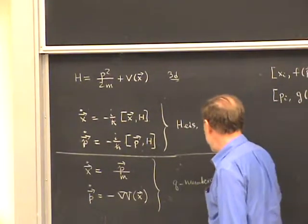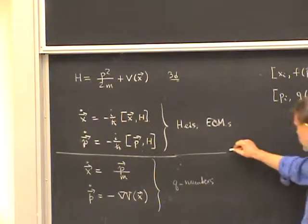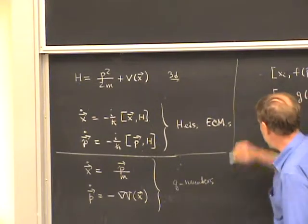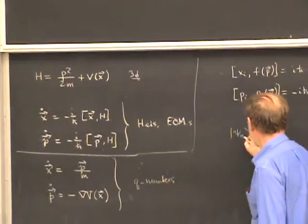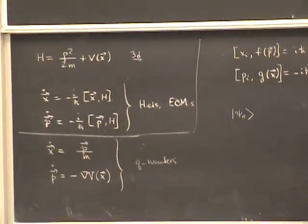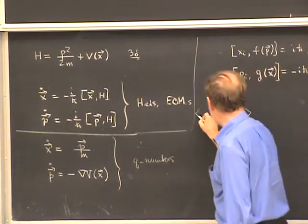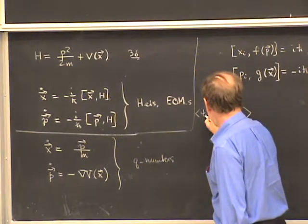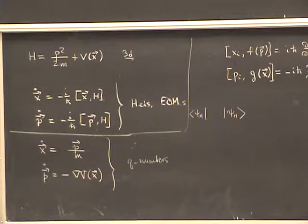We can take these q-number or Heisenberg quantum equations and convert them into c-number equations just by taking expectation values with respect to some state. Let's say we have a state psi with an H subscript because it's in the Heisenberg picture. Let's take these Heisenberg equations and sandwich them between psi_H on both sides in order to get expectation values.